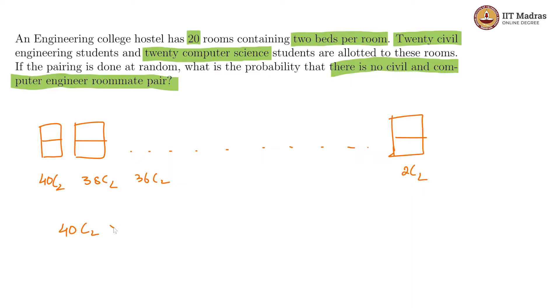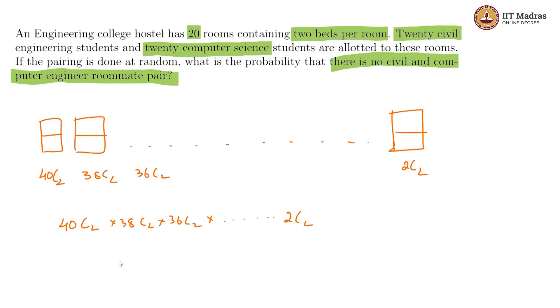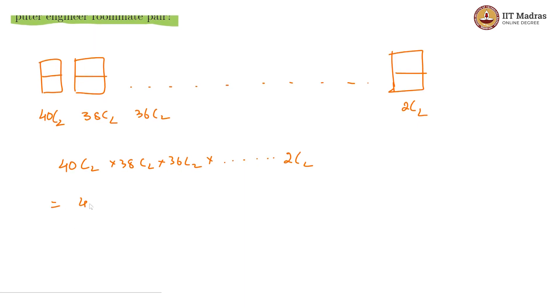So, we have 40C2 × 38C2 × 36C2 in this way so on till 2C2 which is basically 40 × 39 / 2 × 38 × 37 / 2 × 36 × 35 / 2.